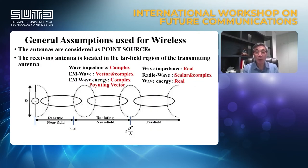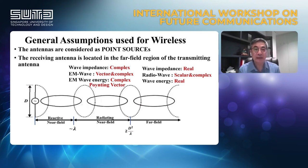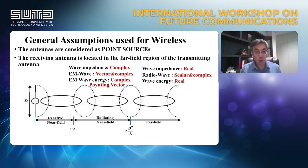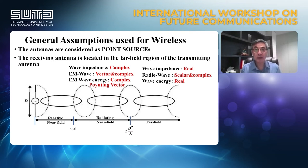We now discuss another issue. In all the literature on wireless communications, antennas are considered point sources and the receiver antenna is located in the far-field region of the transmitting antenna. We know that microwaves are governed by the Poynting vector and Maxwell's equations. The wave impedance is generally complex; the electromagnetic wave is a vector wave with complex wave energy. However, in the far-field region, we approximately assume that the wave impedance is real, and the radio wave transitions from a vector and complex wave to a scalar plane wave.